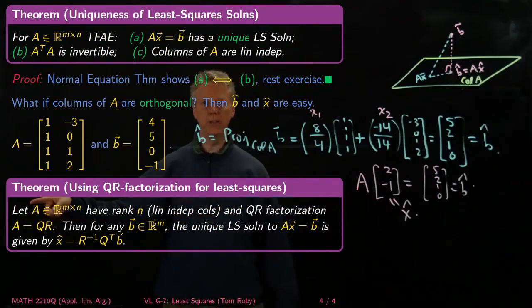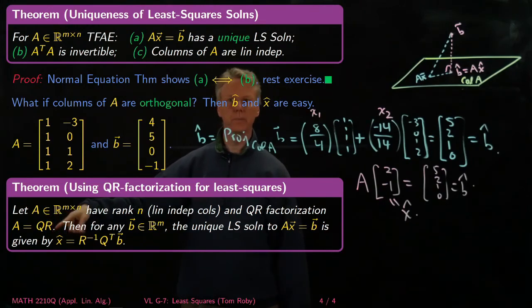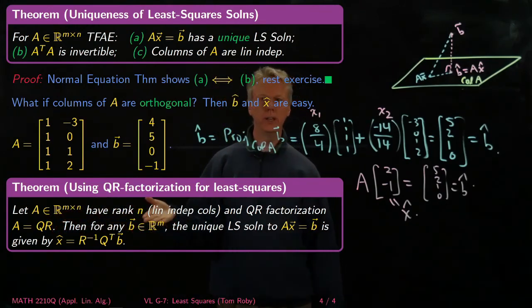So we're assuming that I've got rank n, n linearly independent columns, and the QR factorization A equals QR.